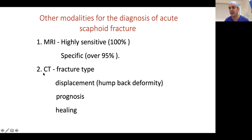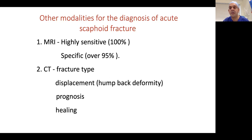CT is your best friend if you do hand surgery. CT will show fracture type — waist or proximal pole — fracture pattern, and displacement. For late presenters with nonunion, humpback deformities can be picked up on sagittal CT. Fracture location informs prognosis and surgical approach. CT is also good for assessing healing: Professor Joe Dias recommends that if at six weeks a waist fracture is still very tender with no bridging trabeculae on CT, stop waiting and proceed to surgery.